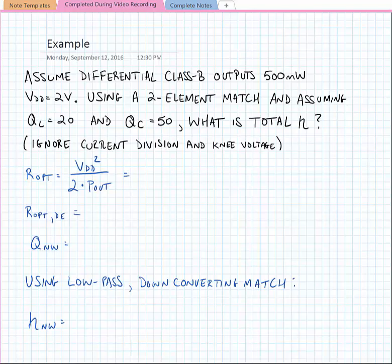So let's do one more example. We'll assume a differential class B amplifier outputs a half a watt using a supply voltage of 2 volts. So using a two-element matching network and assuming that the inductor quality factor is 20 and the capacitor quality factor is 50, what would be the total efficiency in the network? And for the time being, we're going to ignore current division and knee voltage.